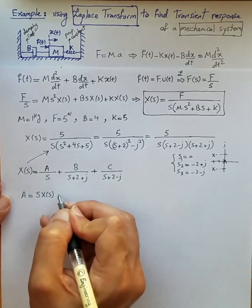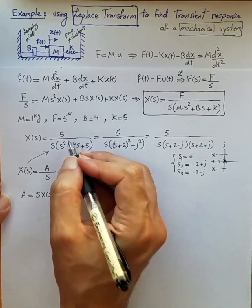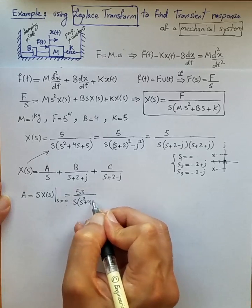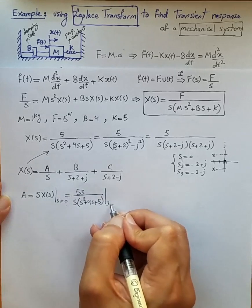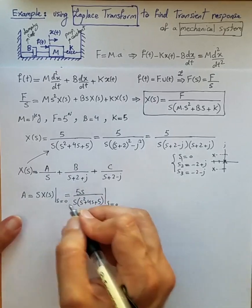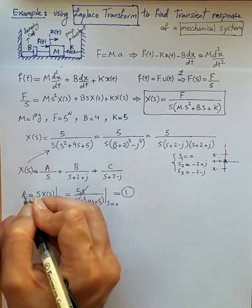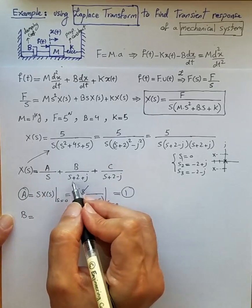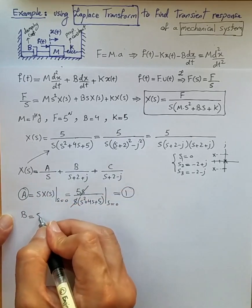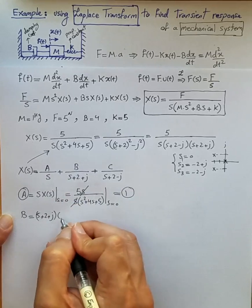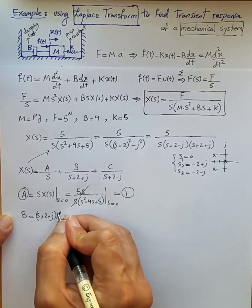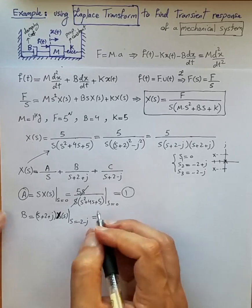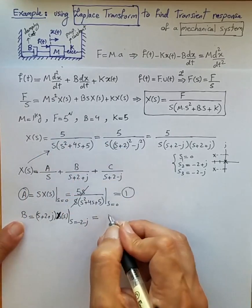So A equals s·X(s) evaluated at s=0, which is 5s / [s·(s²+4s+5)] with s=0. The two s terms cancel and we get A = 1. For B, we multiply both sides by (s+2+j) and evaluate X(s) at s = −2−j.